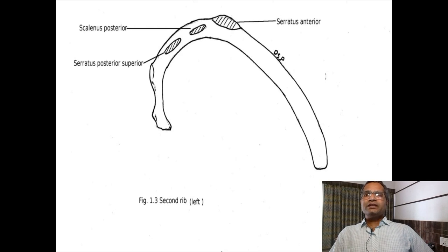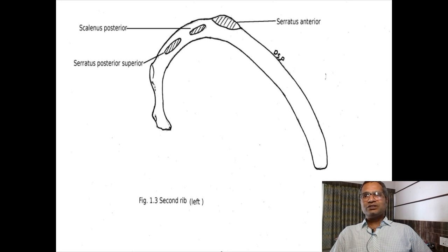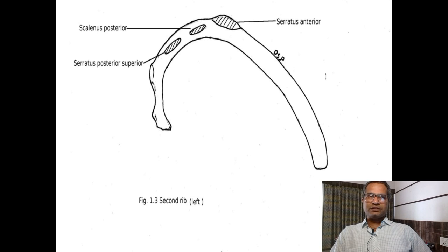The second rib is twice the length of the first rib. It has a head, neck, and tubercles articulating with the second thoracic vertebra. The surfaces are different — it shows upper margin, lower margin, lower border, outer surface, and inner surface. The direction of the outer surface is upward and outward, and the inner surface faces downward and medially. The second rib shows one prominent tubercle on its margin, which gives origin to the second digitation of serratus anterior muscle. Posterior to this tubercle there is attachment of scalenus posterior and serratus posterior superior muscles.